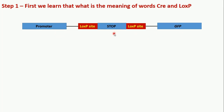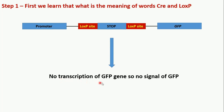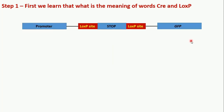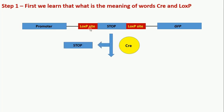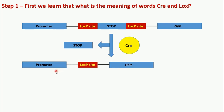Now if we go to transcribe this DNA sequence, there will be no transcription of GFP and we will not get any GFP signal, because the stop sequence is present between the promoter and coding sequence. However, if this sequence is treated with the enzyme Cre, then Cre will recognize the loxP sites, cut them, and the stop sequence will come out. We will then have a new recombined sequence as a result of Cre's recombination activity.